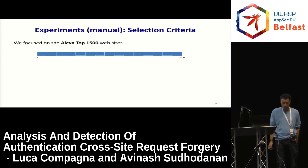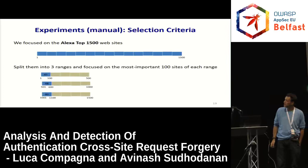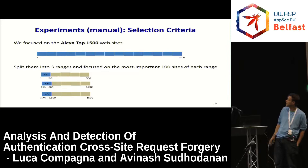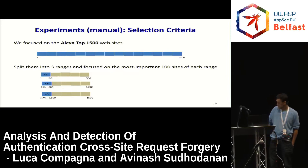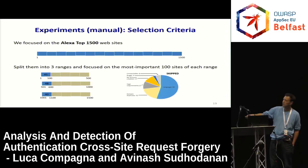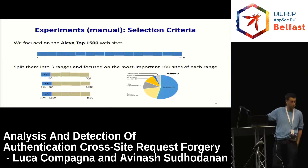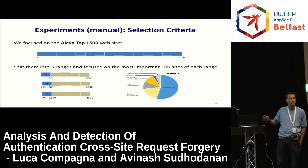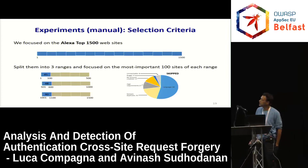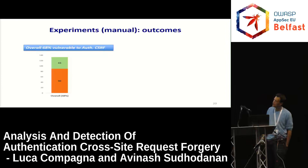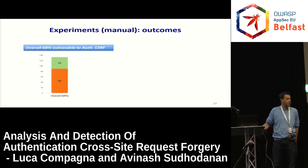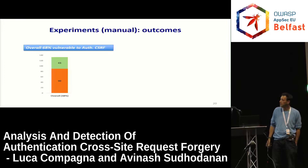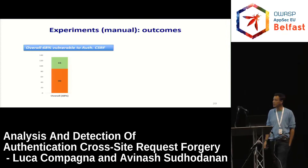For experiments, we focused on the Alexa top 1500 websites, split into three ranges, focusing on the most important 100 sites of each range. In total we analyzed approximately 130 websites manually — the others we didn't consider mainly due to language barriers. What we found is that almost 70% of websites were vulnerable to authentication CSRF.